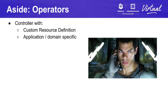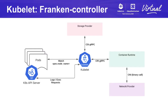As an aside, there is also the operator pattern, which you will see pretty often when working with Kubernetes. The distinction between an operator and a controller is fairly subtle, but an operator is essentially a controller that defines a custom API resource and is application or domain specific. If we take a closer look at Kubelet, we can see that it is a controller as well, with its resource type being the pod. It is a little special though because pods represent units of work and are the original and most fundamental resource type in Kubernetes.